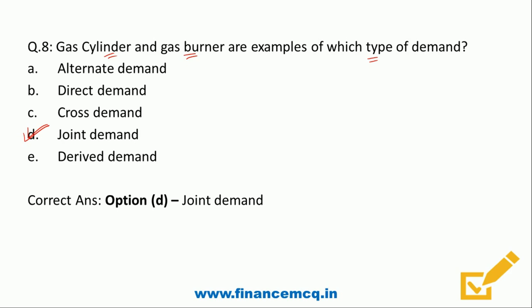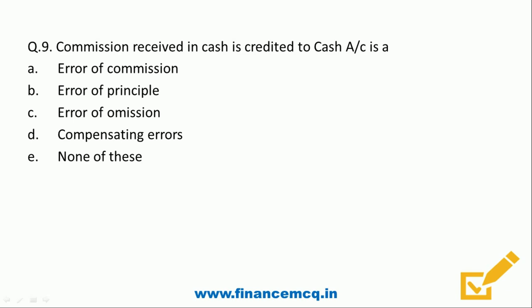Question 9: Commission received in cash is credited to cash account — is this an error of commission, error of principle, error of omission, compensating error, or none of these? The correct entry should be: debit Cash account, credit Commission Received account. But the cashier passed Commission account debit to Cash account credit, recording an income as an expense. Since basic accounting principles are not followed, it is an error of principle. The correct answer is Option B: Error of principle.